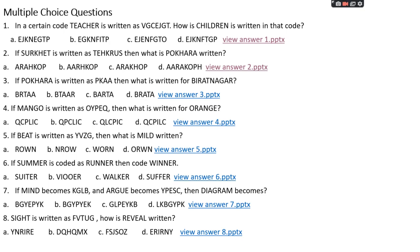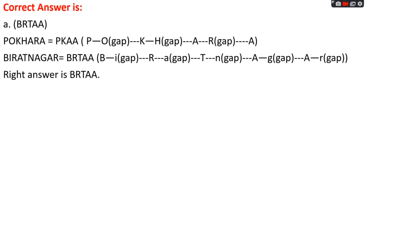Question number three: if 'pokhara' is written as PKAA, then what is written for 'birat nagal'? Option A: BRTAA, Option B: BTAAR, Option C: BARTA, Option D: BRAPA. The right answer is option A, that is BRTAA. In the pokhara code: P→P (O gap), K→K (H gap), A→A (R gap). So for 'birat nagal': B, I gap→R, A gap→T, N gap→A, G gap→A. The right answer is BRTAA.